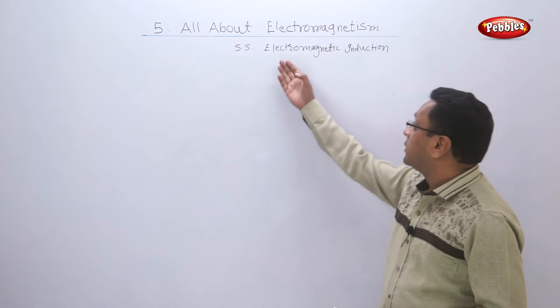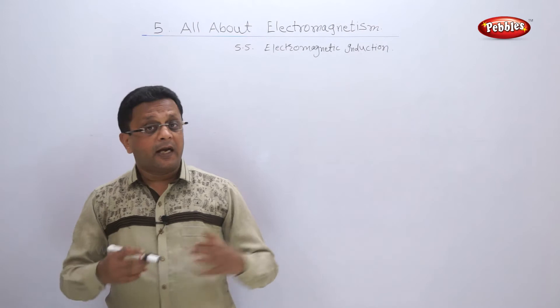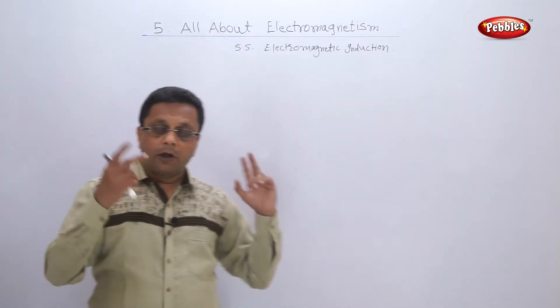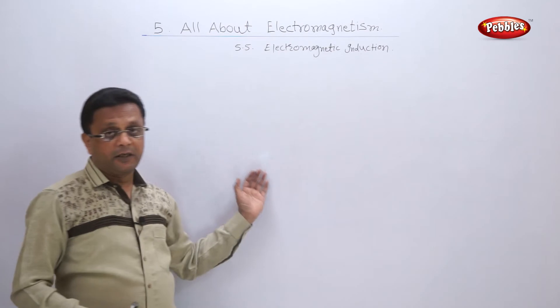Let us learn about electromagnetic induction. We have learned about the electric motor. In the electric motor, three things must be present: a magnetic field, an electric current (power supply), and a rotating axle. We provided the magnetic field and the electric current, so the third thing — rotation — was taking place.